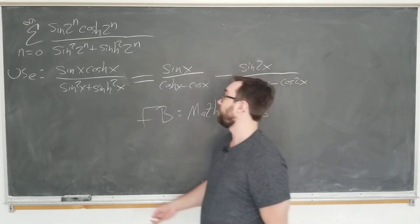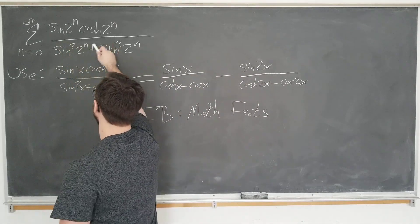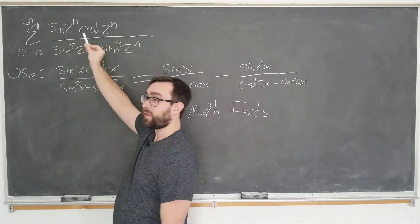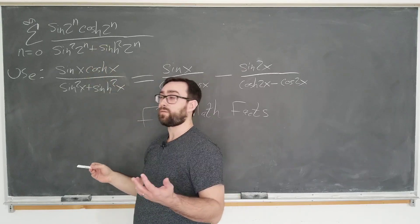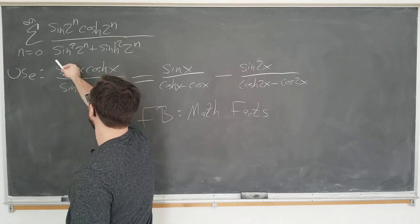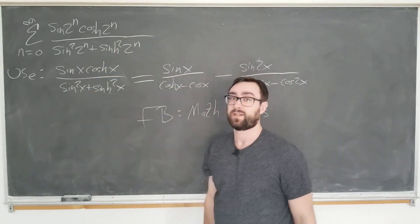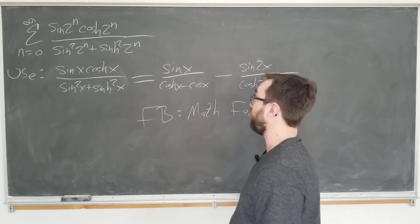Okay, so we have a sum as n goes from 0 to infinity of sine of 2^n, the hyperbolic cosine function which is called the cosh of 2^n over sine squared 2^n plus sinh squared 2^n, however you want to pronounce it.